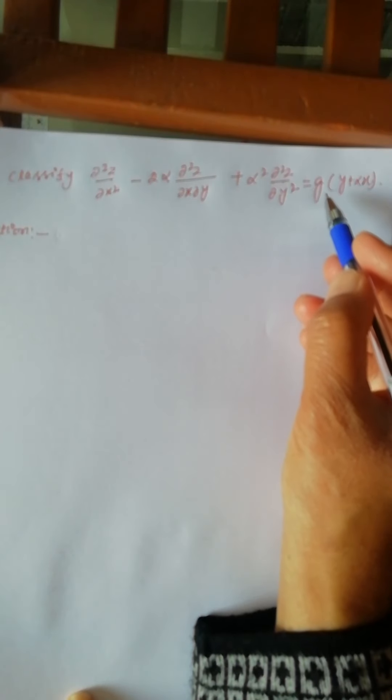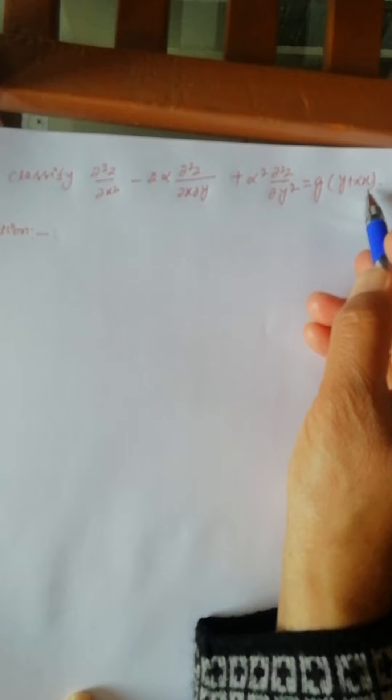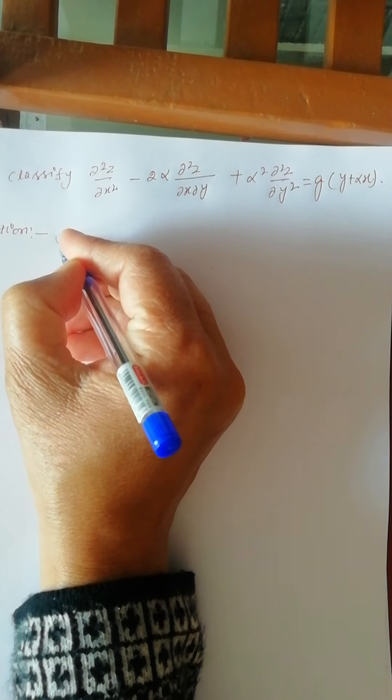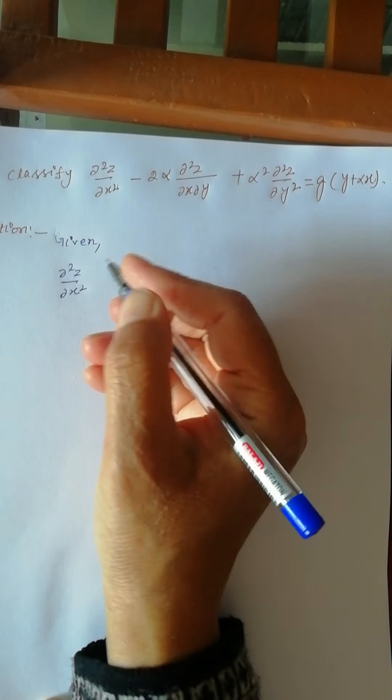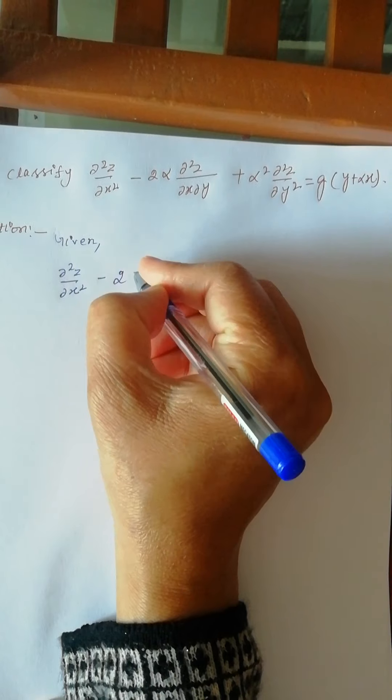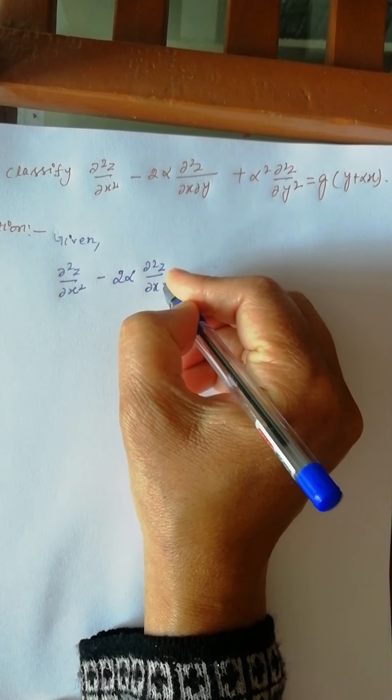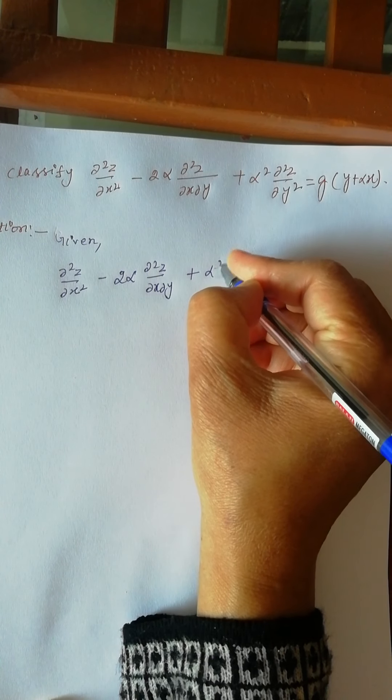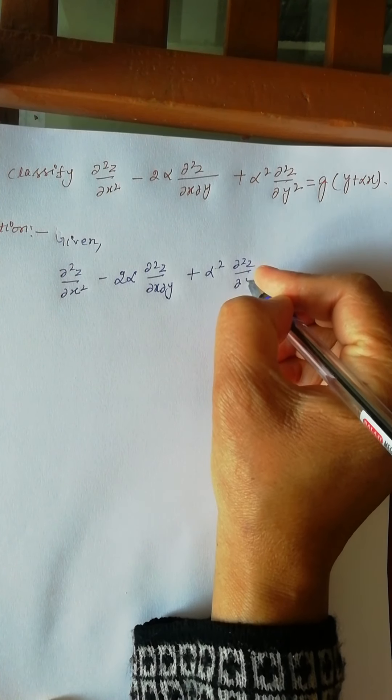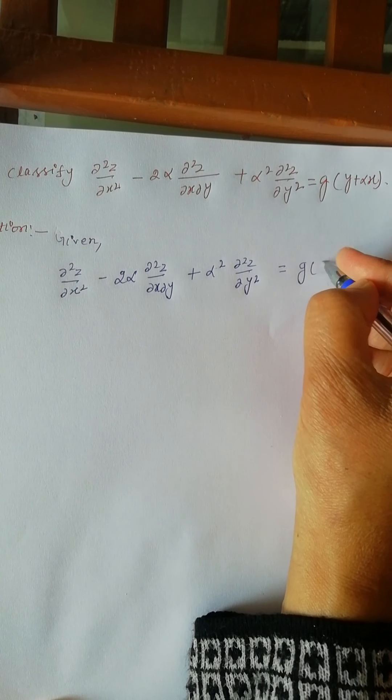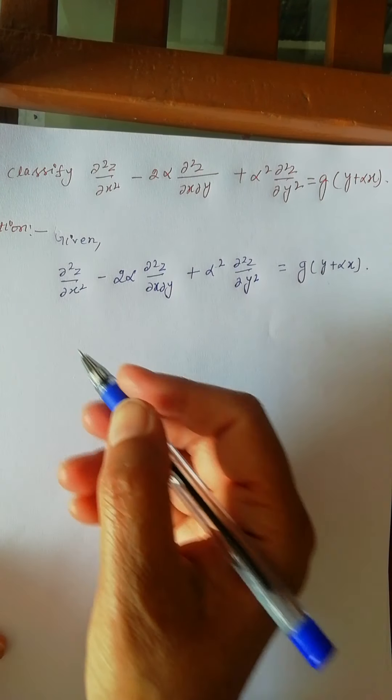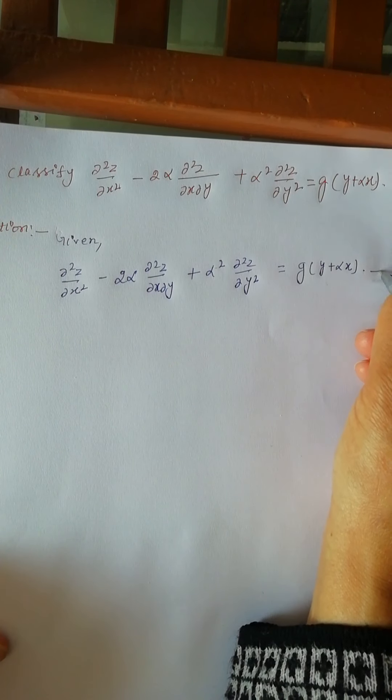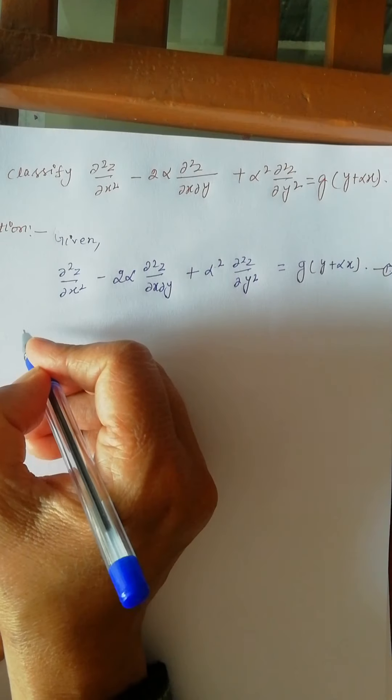= z(y + αx). Now given differential equation ∂²z/∂x² - 2α∂²z/∂x∂y + α²∂²z/∂y² = z is a function of (y + αx). Or this one can be written as, let it be equation (1). One can be written as,